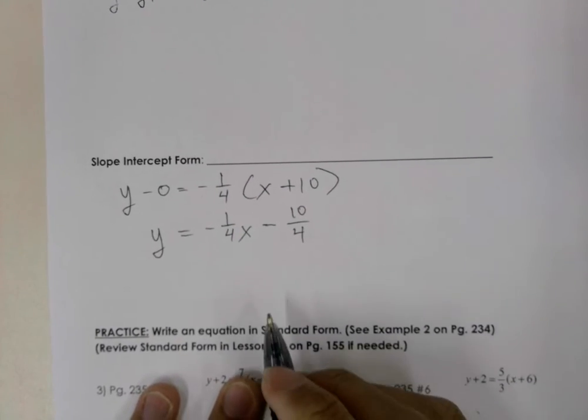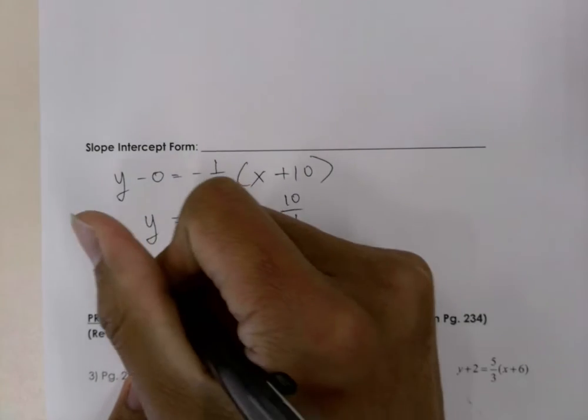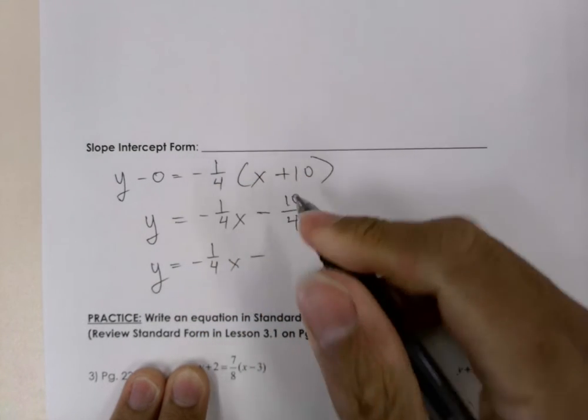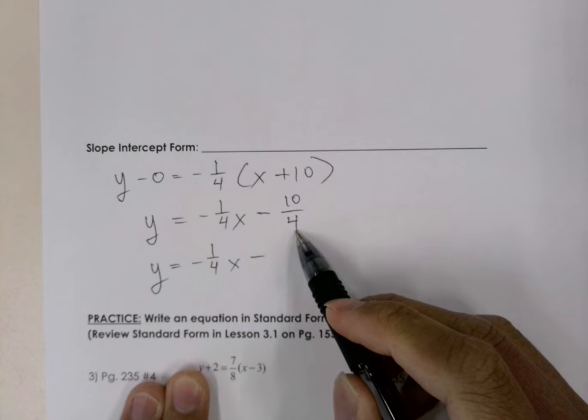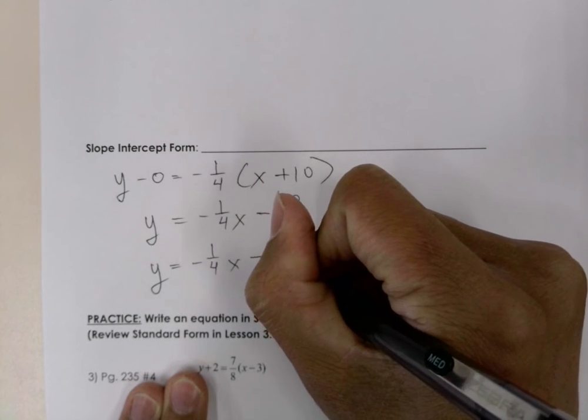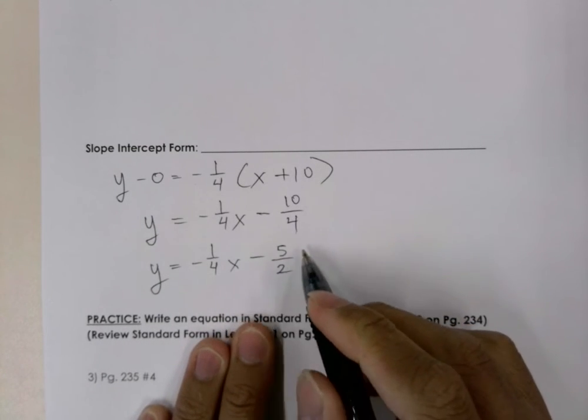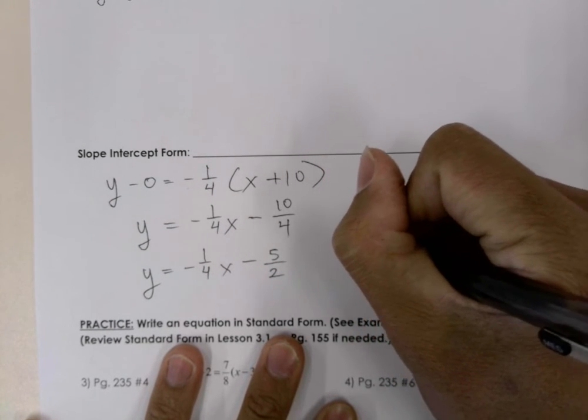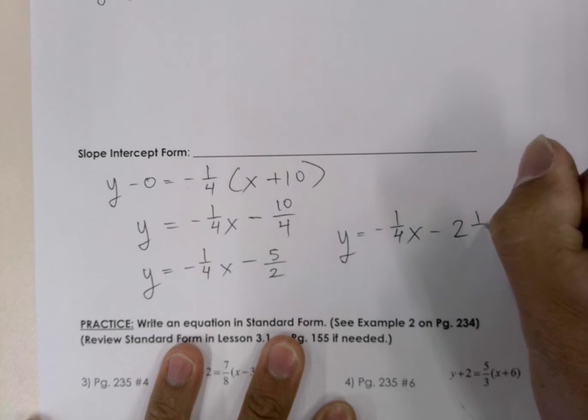So we're still not done yet because we need to simplify this fraction. So we're going to get y is equal to negative 1 over 4x minus. And the greatest common factor in the numerator and denominator is 2. So we'll divide the numerator by 2 and we'll get 5. We'll divide the denominator by 2 and get 2. Now this fraction can be reduced further. So let's go ahead and do that. And we'll get y is equal to negative 1 over 4x minus 2 and 1 half.